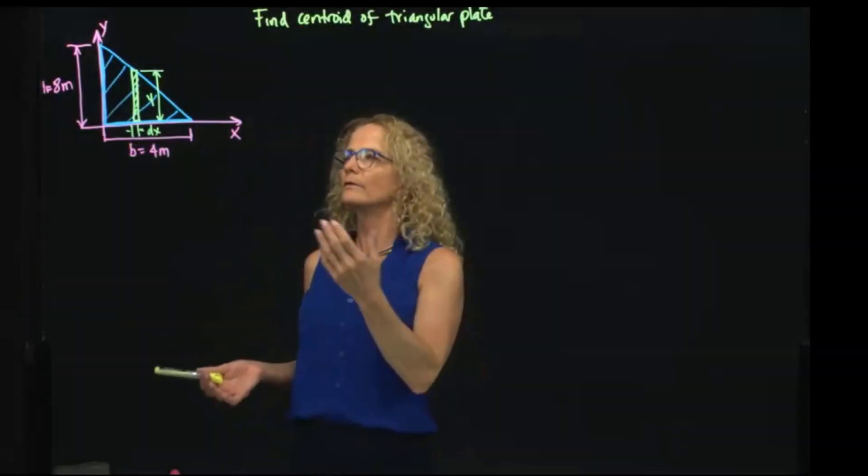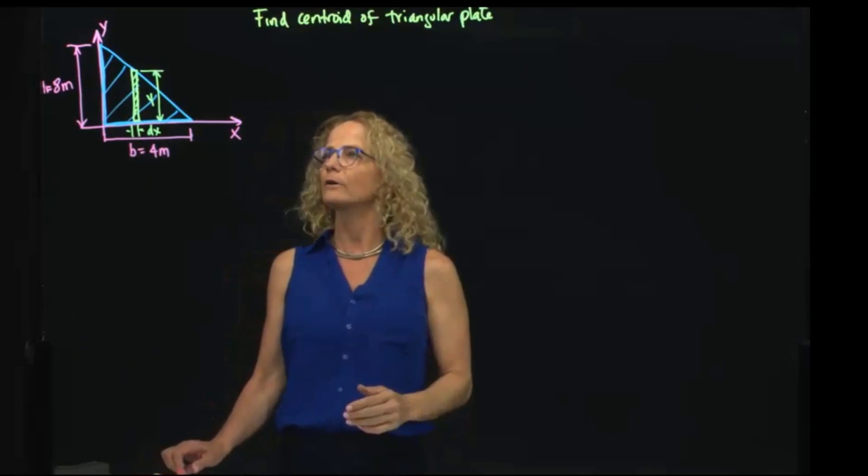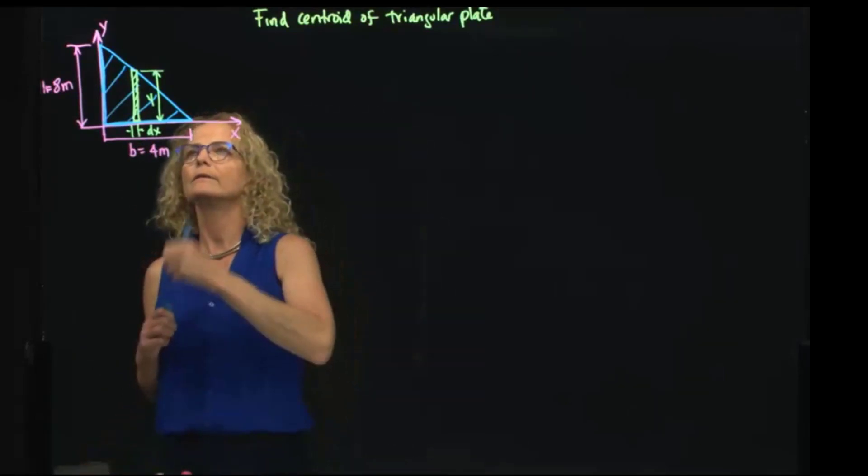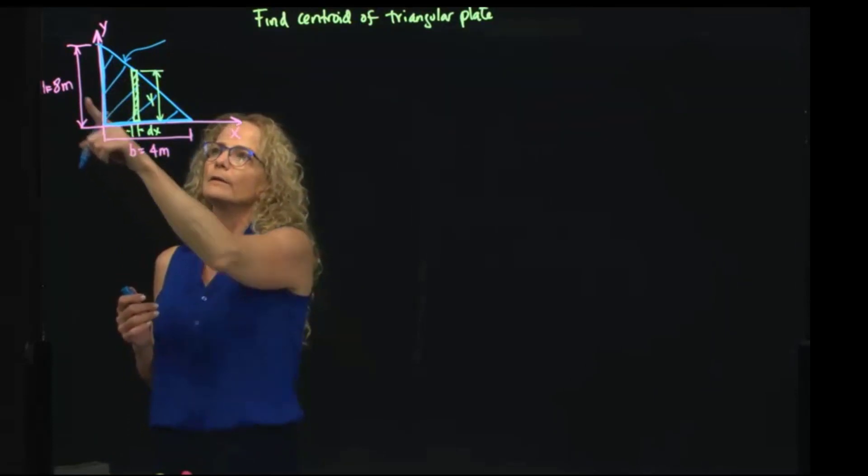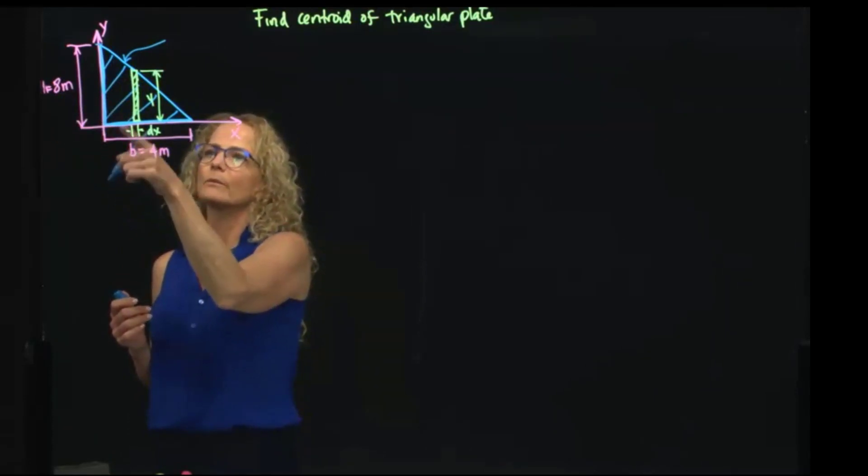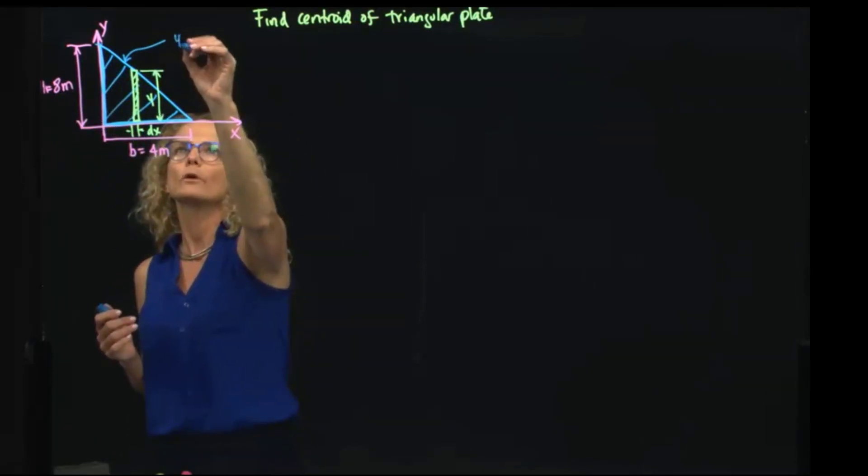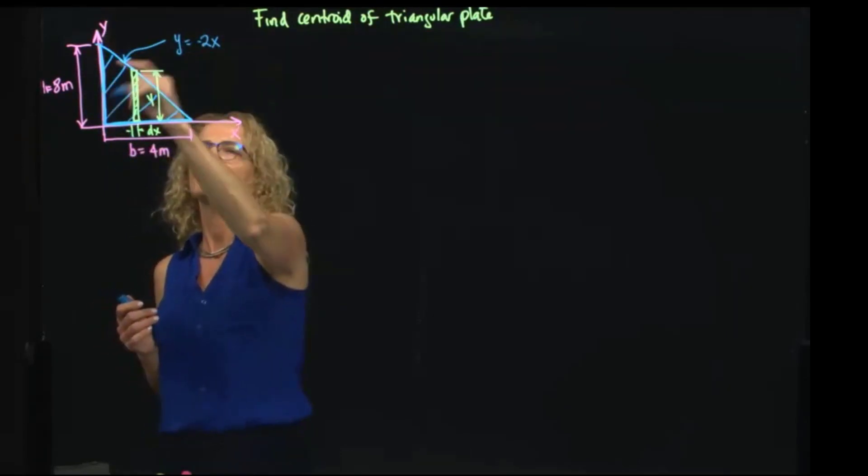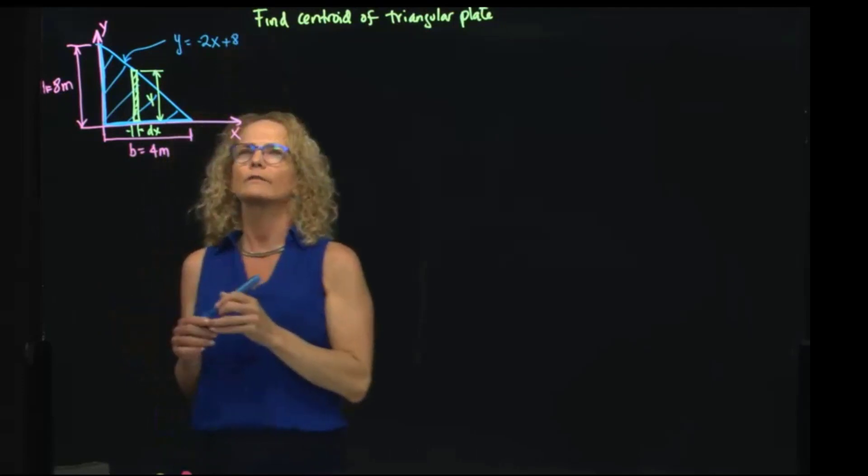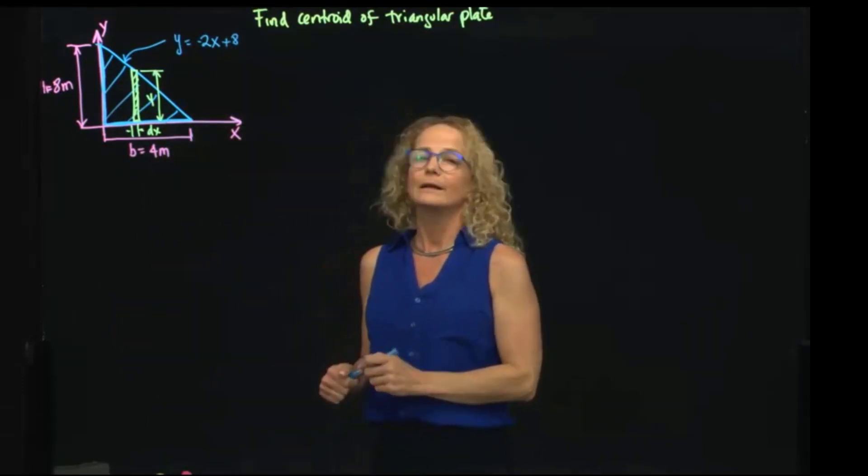Since we are given the height and the base of this triangle, let's find this line. The slope will be a negative slope, Y over X, that will give me negative 2. So I know this is negative 2X, and it intersects with Y at 8. So that's the line that describes that triangle.